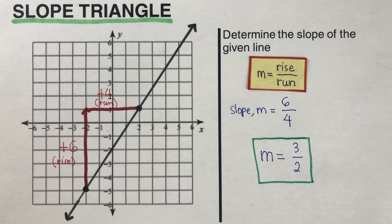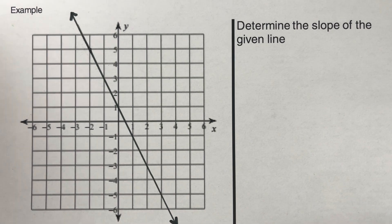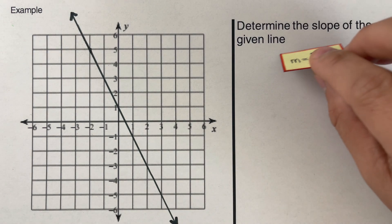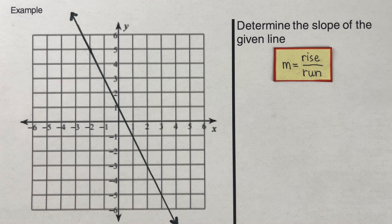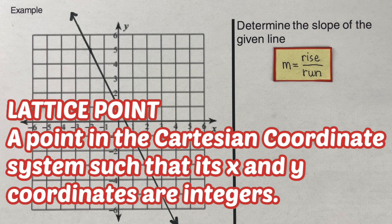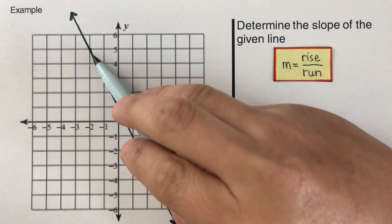Now, what happens if in some cases we are not given the dots? In this line right here, we don't have two dots unlike the first example. So how do we determine the slope? The formula for slope is rise over run. If no points are given to us, we need to determine those points — and to make it easy to determine the slope, we pick the lattice points. A lattice point is a point in the Cartesian coordinate system where its x and y coordinates are integers. So we trace the line and look for lattice points.